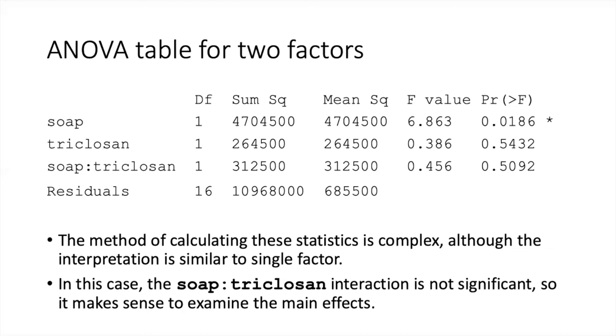Once we've run the ANOVA, it will generate an ANOVA table that is similar in form to the ANOVA table that we saw with a one-factor ANOVA.